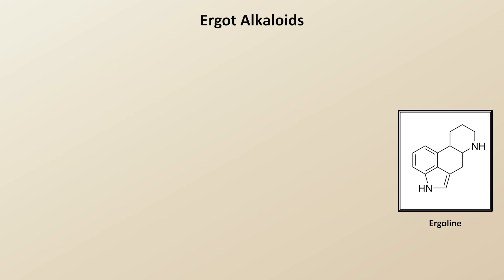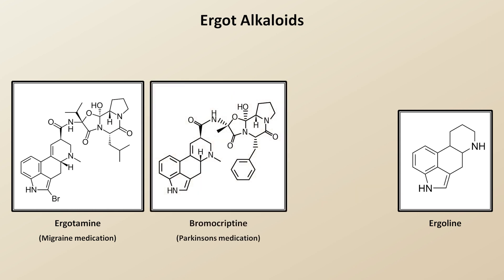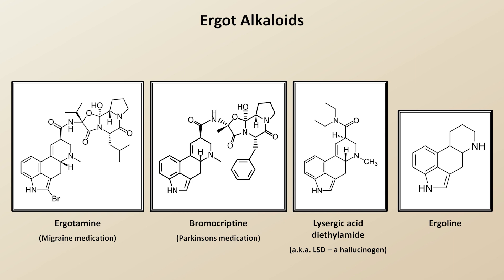The study of ergoline and other naturally occurring ergot alkaloids has resulted in the discovery of several important drugs. These include ergotamine, which is a migraine medication, and bromocriptine, used in Parkinson's disease as well as to suppress production of the hormone prolactin. Naturally occurring ergot alkaloids were also the original starting point for the organic synthesis of lysergic acid diethylamide, otherwise known as LSD. When it was first discovered, there was hope it could have potential use in the treatment of a variety of psychiatric disorders, which of course turned out not to be the case.